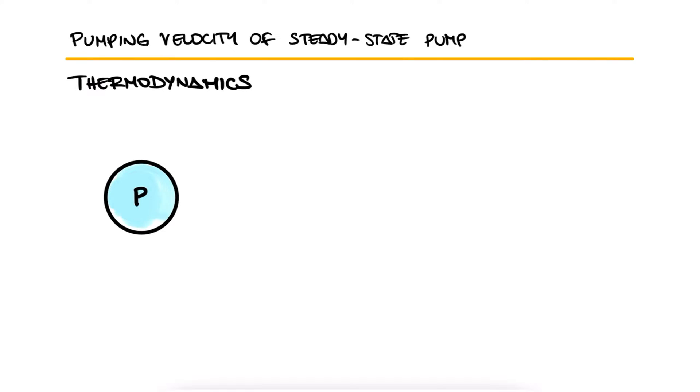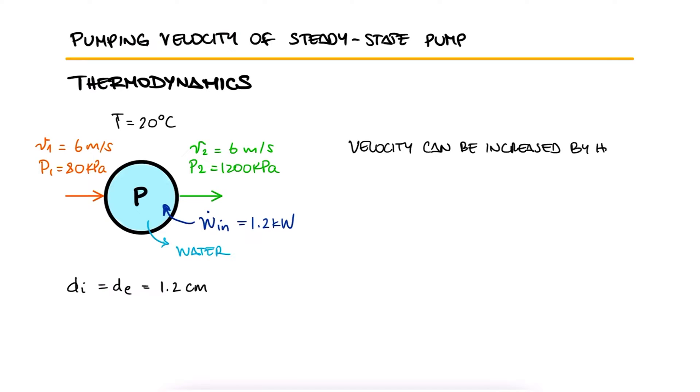A pump increases the pressure of water at 20 degrees Celsius from 80 kilopascals to 1200 kilopascals. Both the inlet and outlet have a diameter of 1.2 centimeters. The pump is currently pumping water with a velocity of 6 meters per second, but it's rated for 1.2 kilowatts. By how much can the velocity of the water be increased when using the pump's maximum power?